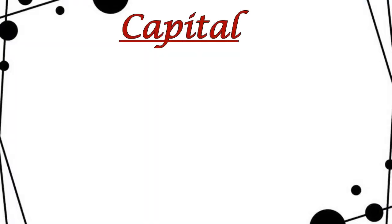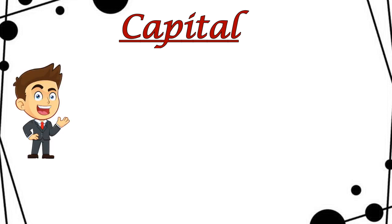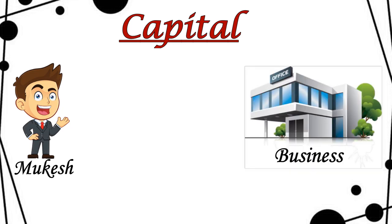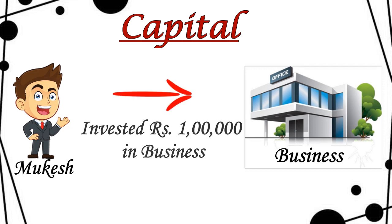The first term is capital. Capital kise kehte hain, let's understand with an example. There is an individual whose name is Mukesh. Mukesh wants to start a business. To start a business, you need to invest some amount initially — you have to purchase machinery or there are many expenses. So starting mein kuch amount invest karna hota hai. For example, Mukesh invested rupees one lakh to start his business.